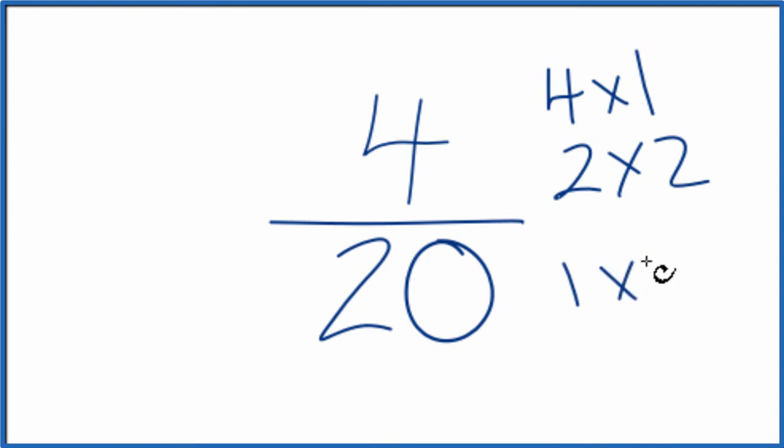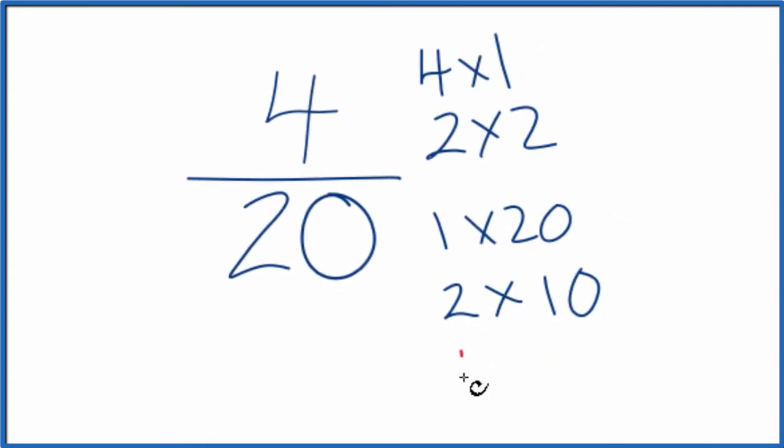20 we could do 1 times 20, 2 times 10, and 4 times 5. 4 times 5 is 20.